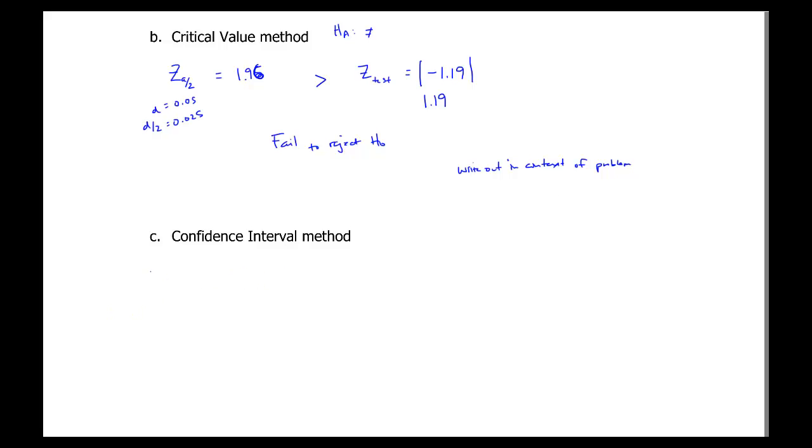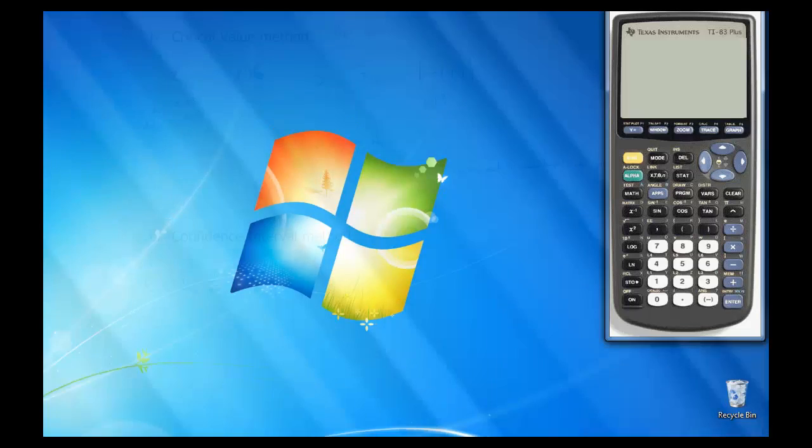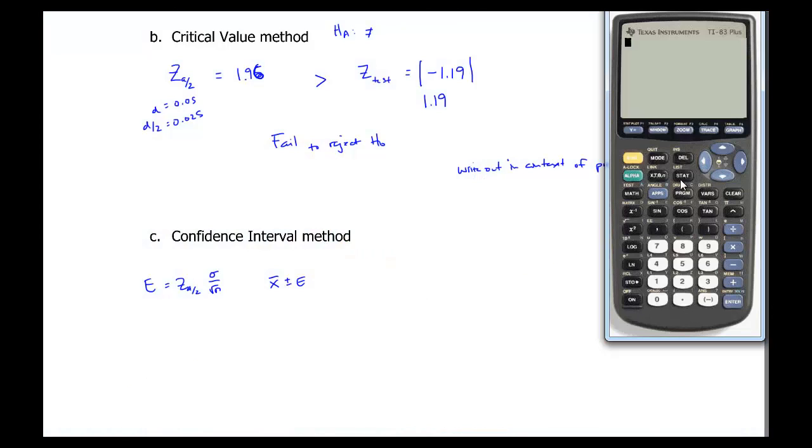So the last method is the confidence interval method. In a previous video, you saw how to do this with the equation. So first you solve for E, and then you put that into this equation. But let's just quick review how to do it on the calculator. So going over to tests, this is a z interval. Remember z because we know the population standard deviation. So we're using stats that are provided in the problem. The population standard deviation is 6.54.